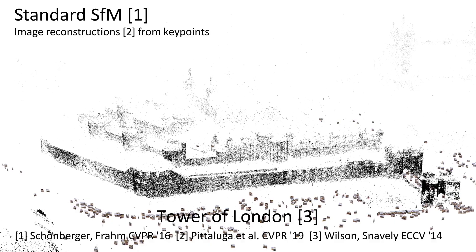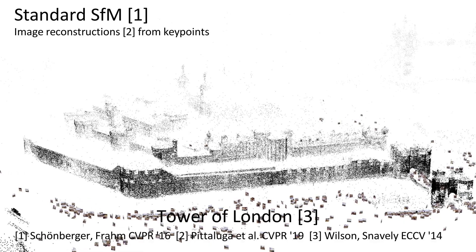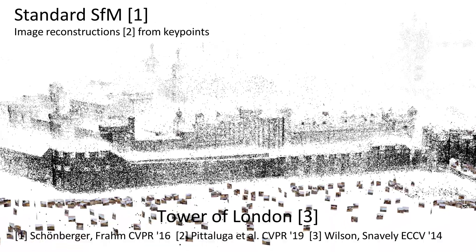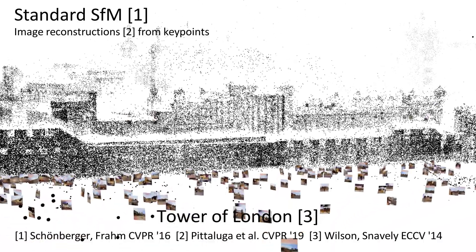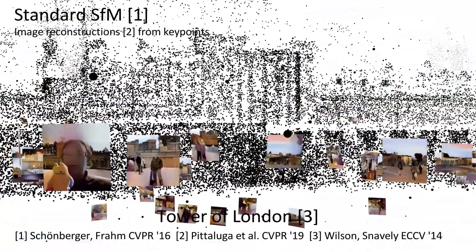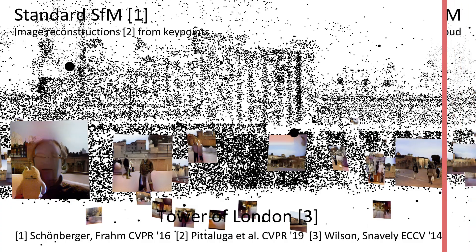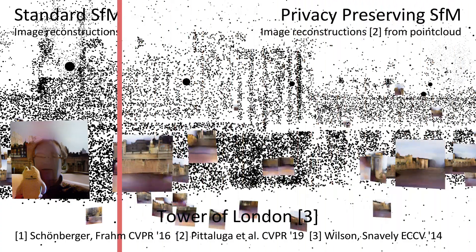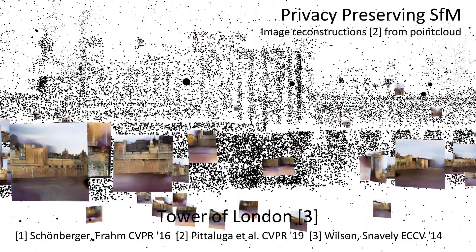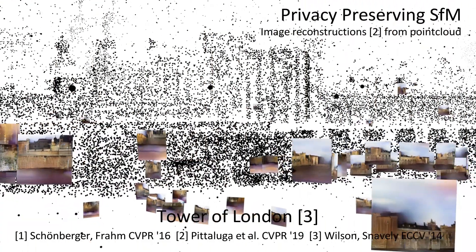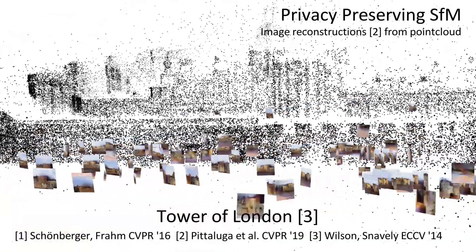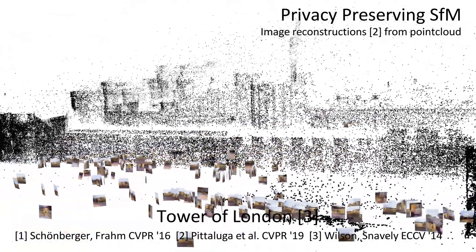We demonstrate the practical applicability of our methods on multiple internet image collection datasets and provide comparisons with the standard SfM pipeline. The shown images are feature-rendered versions from either the extracted image features for standard SfM, or the privacy-protected 3D points in our line-based model.